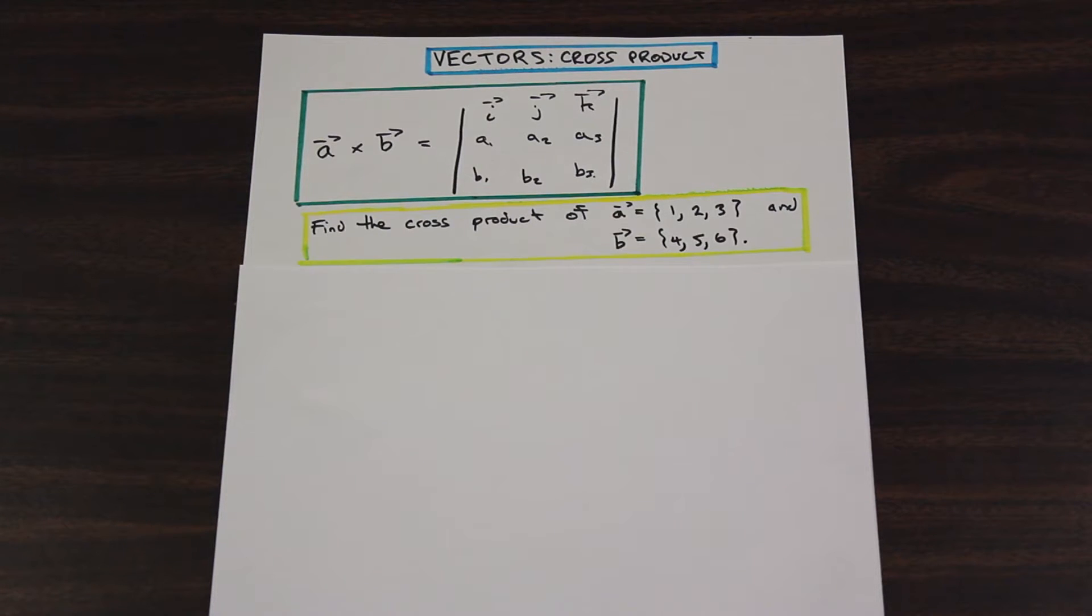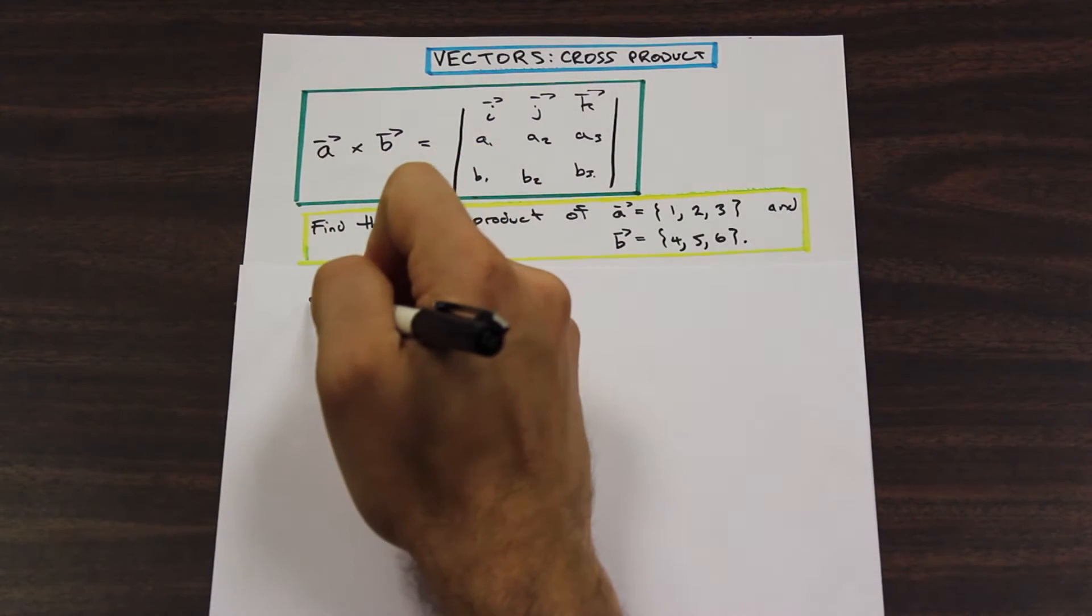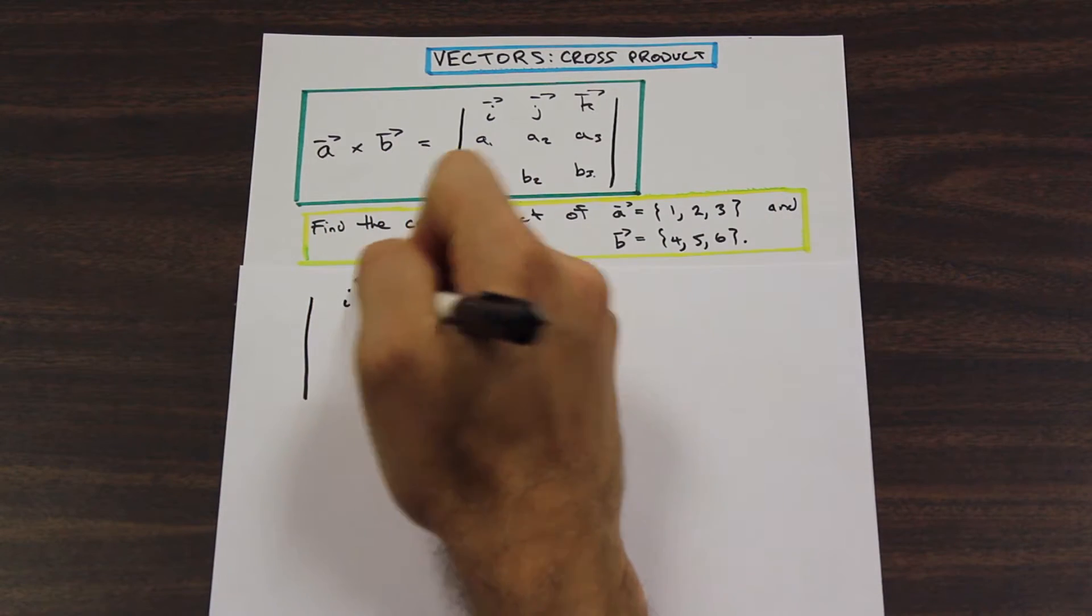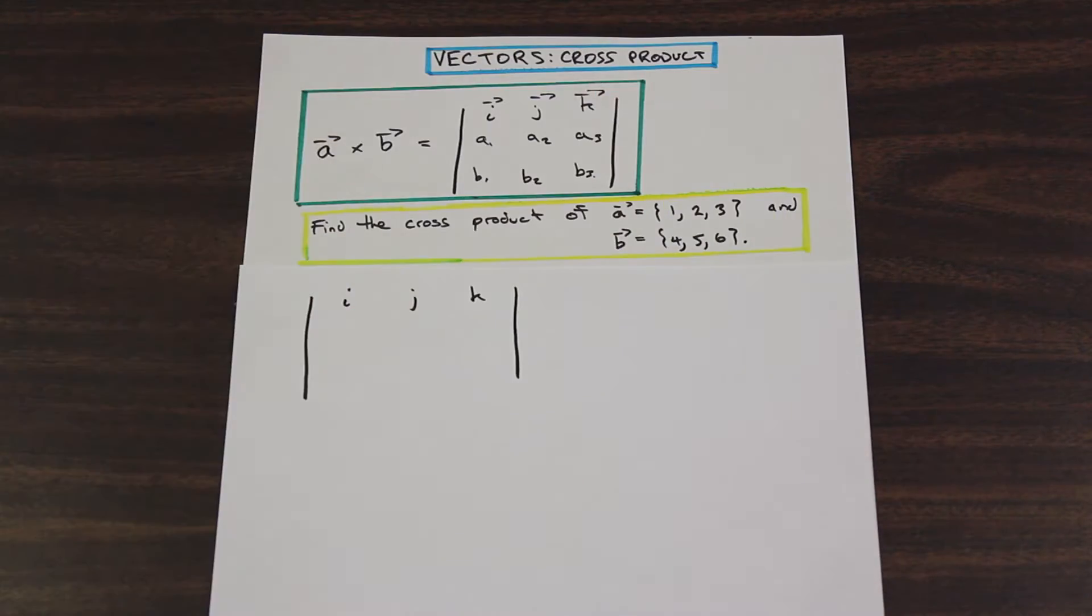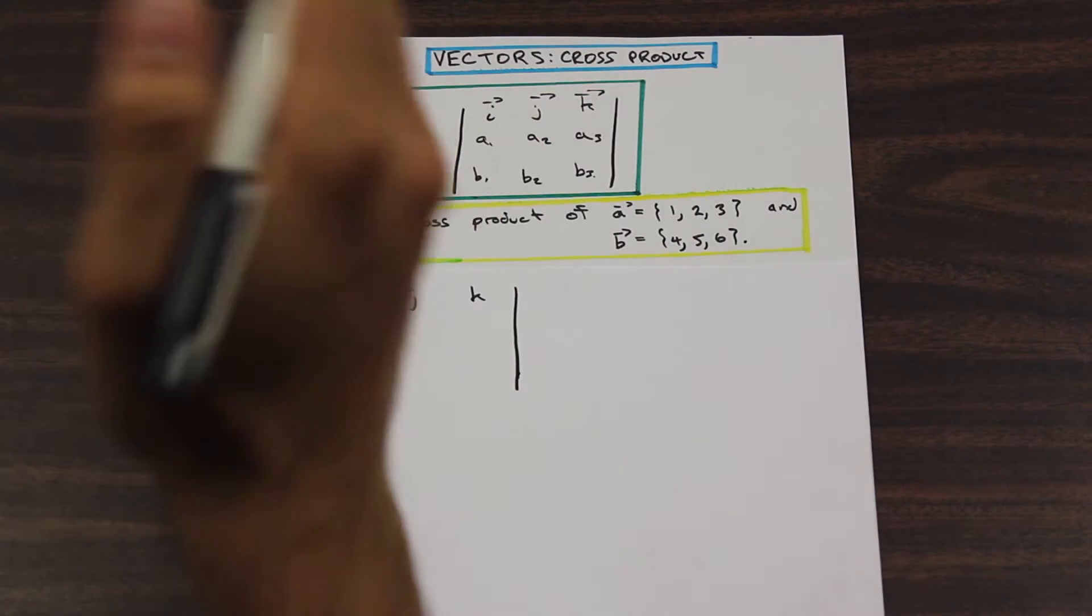In the green box I have a product of two vectors here, vector A and vector B, and we want to find the cross product between these two vectors. Alright, so the way we calculate the cross product is as follows. So we're going to draw our determinant out here, and we're going to go I, J, K, with two big lines there.